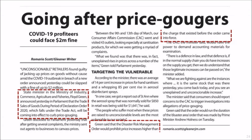A state minister in the Ministry of Industry, Commerce, Agriculture and Fisheries announced in parliament that trade sales of goods during the period of the declaration order would be coming into effect to curb price gouging — to prevent prices from rising. The disaster risk management order would prohibit price increases higher than the charge that existed before the order came into force.